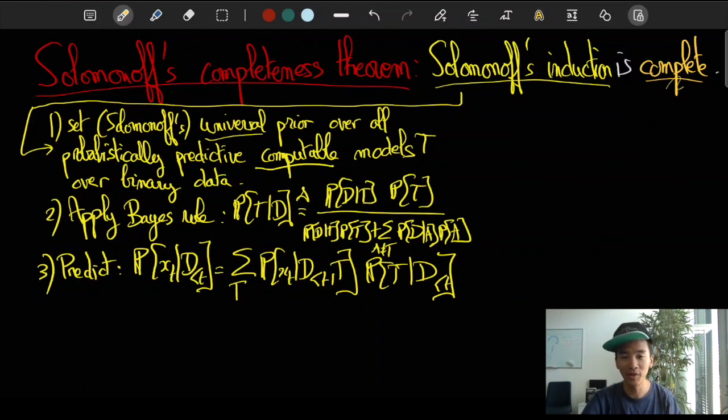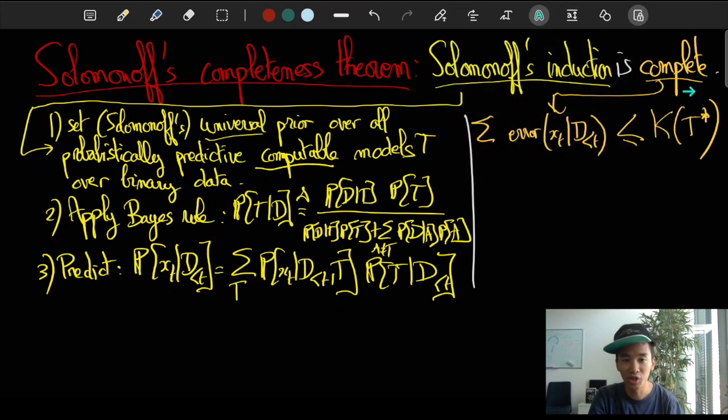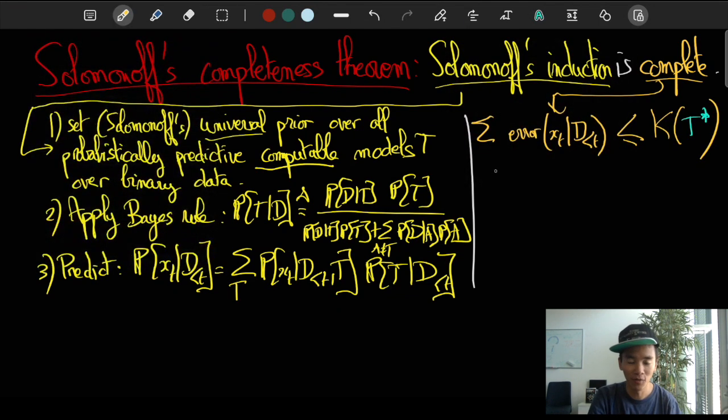And the most beautiful of these properties, I would argue, is Solomonoff's completeness theorem, that says essentially that the sum of all future errors of predictions we're going to make is going to be upper bounded by some right-hand term, which is essentially the complexity of the world.